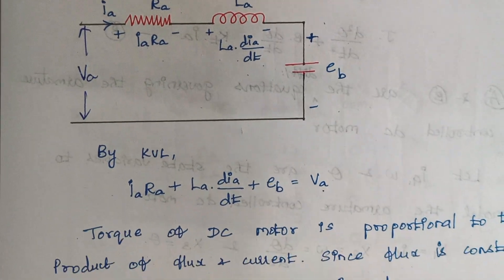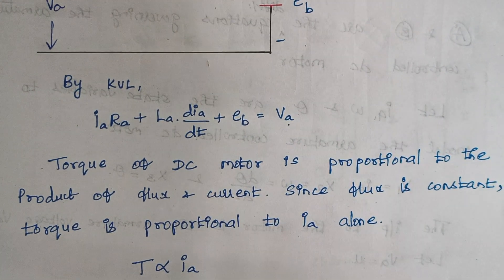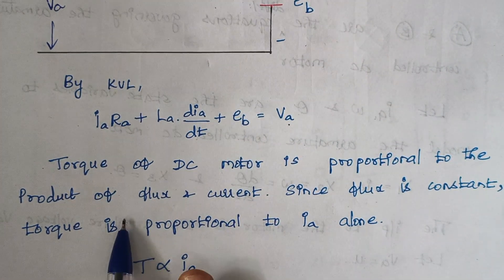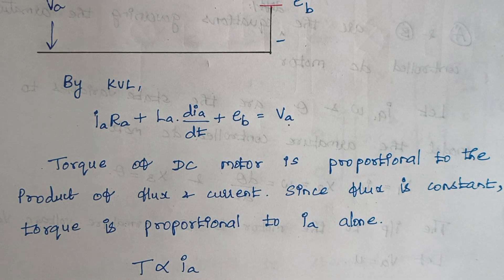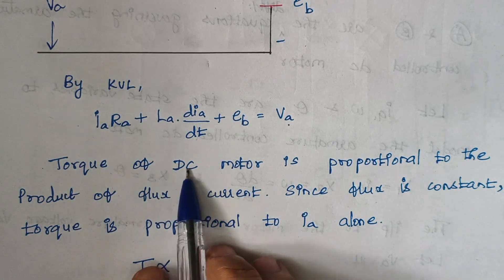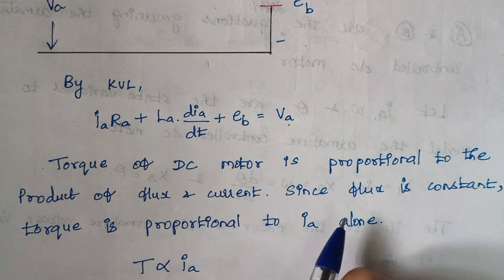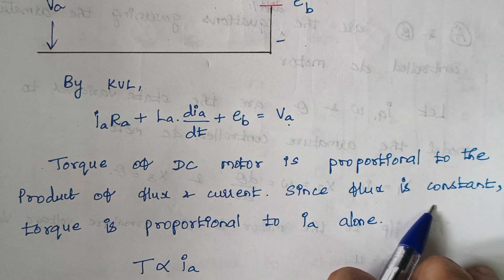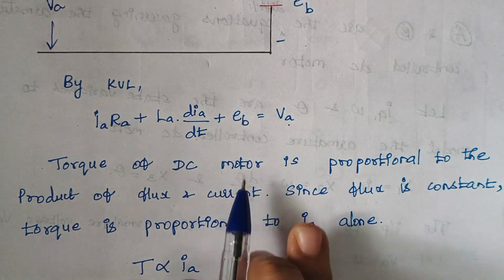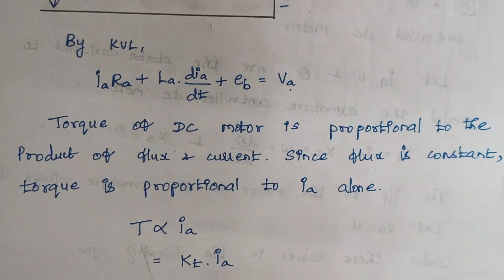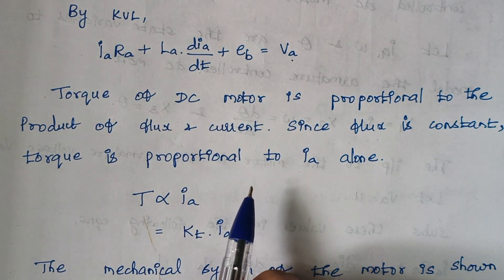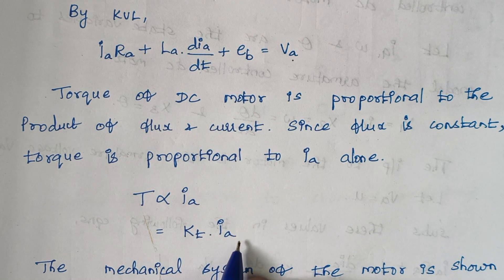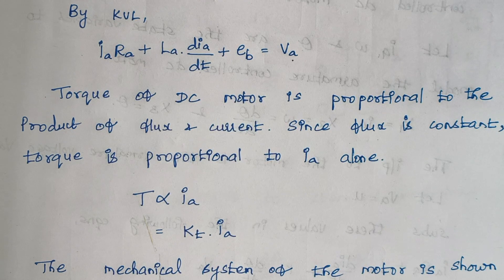The torque of a DC motor is proportional to the product of flux and current — this is a basic concept from machines. Since flux is constant, torque is directly proportional to the armature current IA. Introducing a proportionality constant, torque T = KT·IA. Now the electrical part of the armature is complete and we move to the mechanical part.